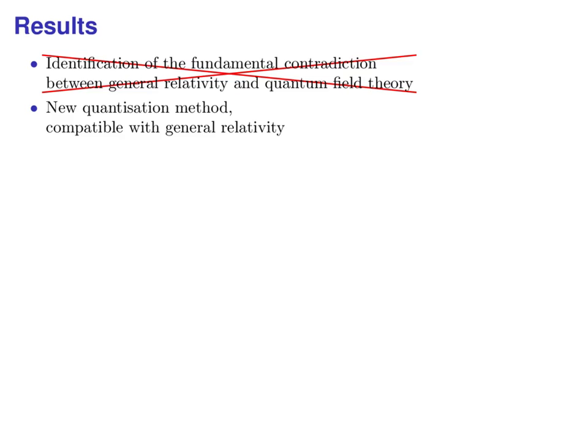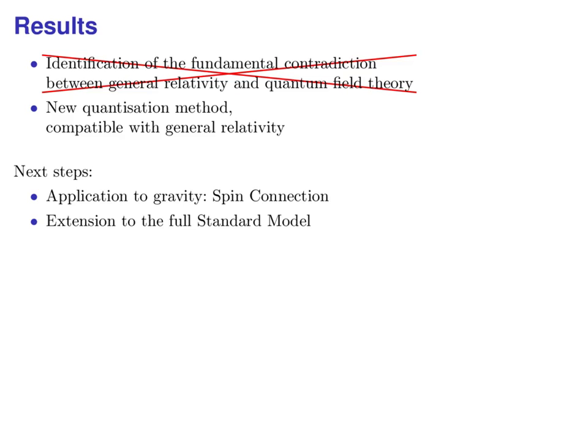First of all, this is just the beginning. To actually apply the new method to general relativity, we have to include the spin connection. That's a lot of work. Also, I can only describe electrons, positrons and photons so far. The extension to the full standard model of quantum field theory, including quarks, leptons and interactions, including the Higgs boson, is a lot of work, too, probably even more. Anyway, I don't see any further fundamental obstacles on this long way. The road to quantum gravity is clear.